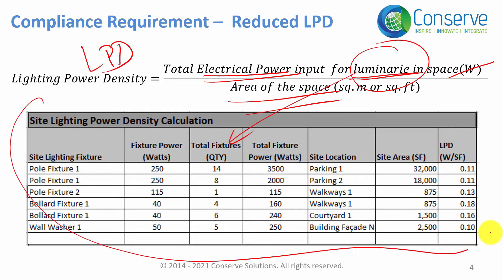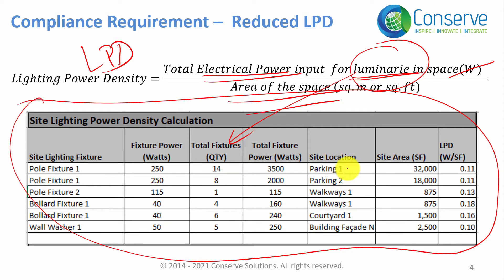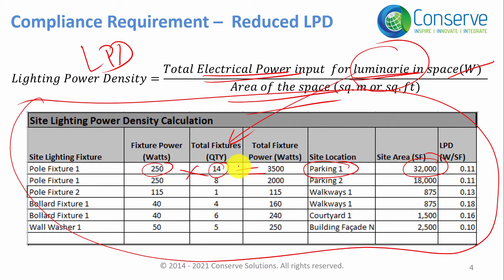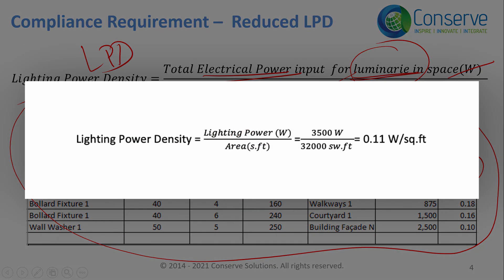Here is an example calculation of Lighting Power Density. Consider Parking One, which has an area of 32,000 square feet and 14 lighting fixtures each of 250 watts. Total electrical power is 250 × 14 = 3,500 watts. The area is 32,000 square feet, so the LPD is 3,500 ÷ 32,000 = approximately 0.11 watts per square foot.